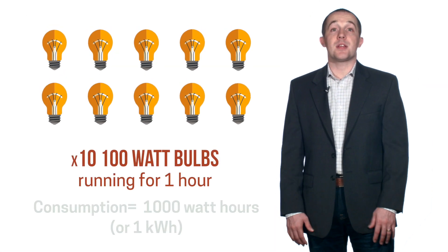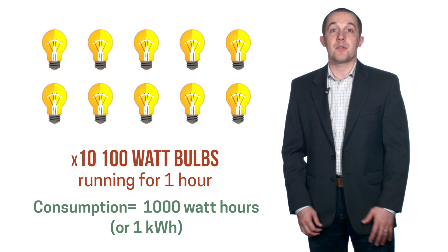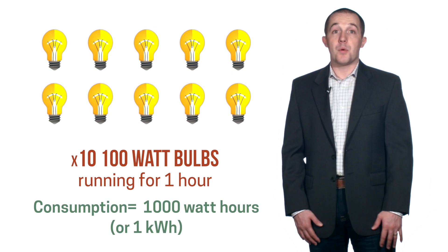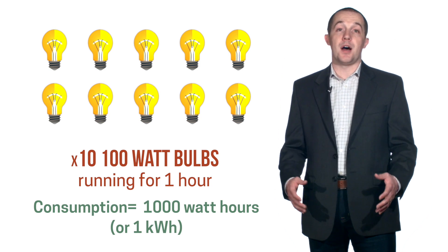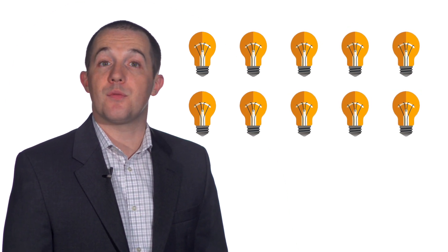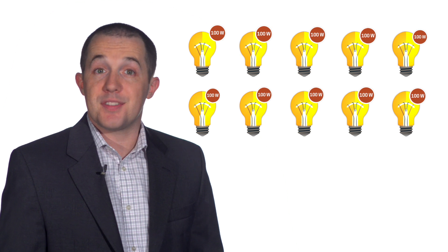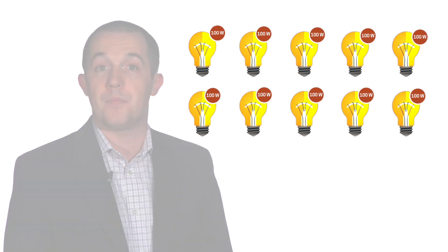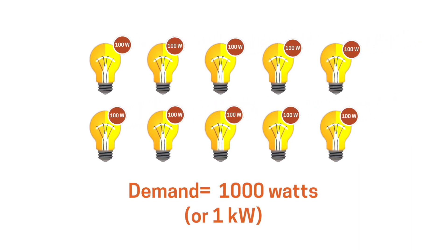Now let's imagine a bank of 10 100-watt light bulbs that we run continuously for 1 hour. That's 1,000 watts consumed for an hour, which means our consumption is 1,000 watt hours or 1 kilowatt hour. Each bulb, however, has an individual demand of 100 watts or 0.1 kilowatts, but now we have 10 bulbs, which combined demand 10 times the energy from the utility than a single bulb. 10 100-watt bulbs running for 1 hour would mean our demand in this case would be 1,000 watts or 1 kilowatt. To meet our demand, the utility must have 1 kilowatt ready at all times in case all 10 bulbs are turned on.